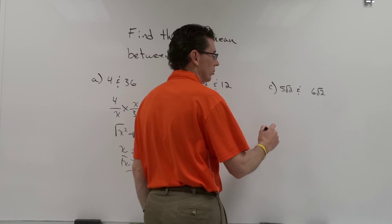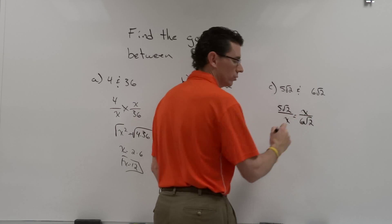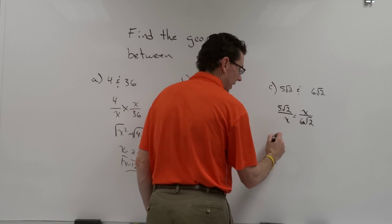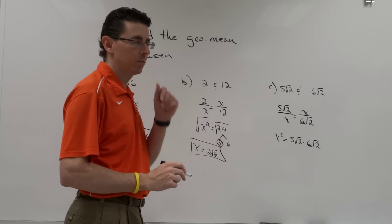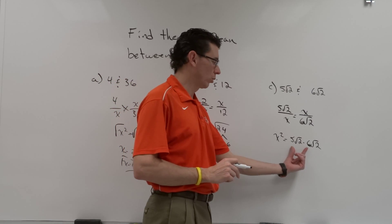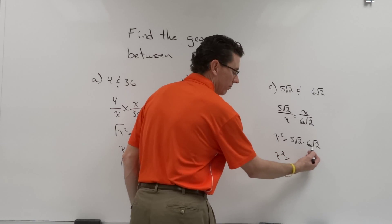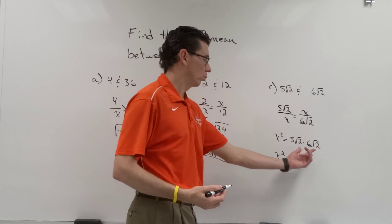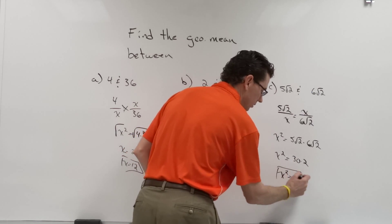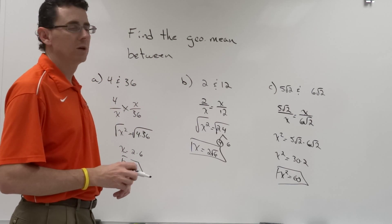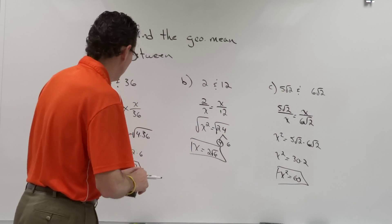What if we had some radicals in there? So 5 root 2 and 6 root 2 — again I'm going to put 5 root 2 over x equals x over 6 root 2. Cross multiply to get x squared equals 5 root 2 times 6 root 2. Remember your properties of multiplying radicals: multiply coefficients together and multiply the radicands together. So 5 times 6 is 30, and root 2 times root 2 gives root 4 which is 2 — so x squared equals 60. Therefore the geometric mean between 5 root 2 and 6 root 2 is root 60.